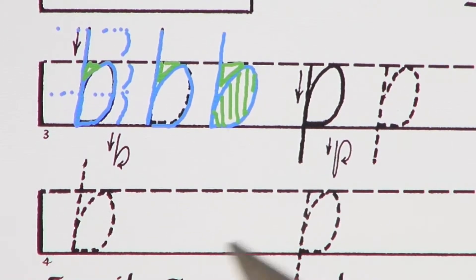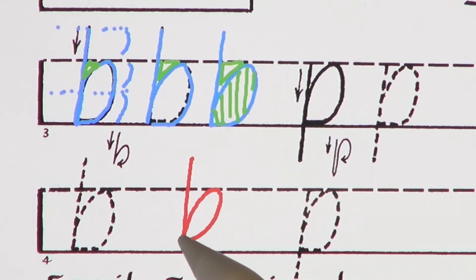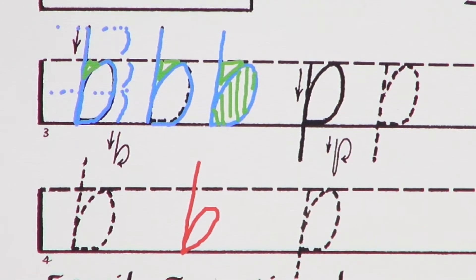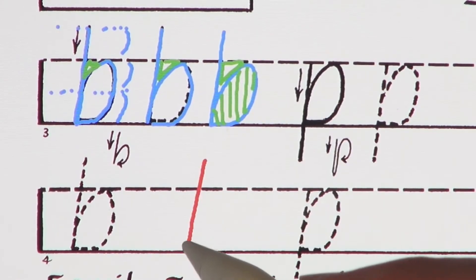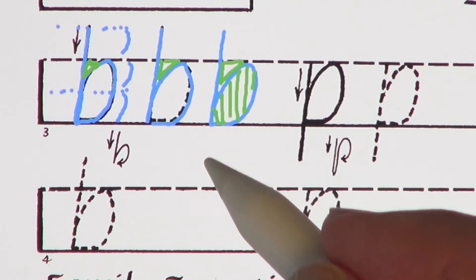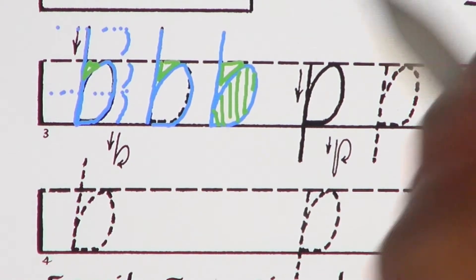Some common mistakes with the letter b are having it float above the baseline, or not meet the waistline, making the counter too rounded, branching too early, or adding a loop.